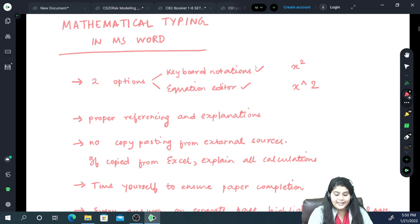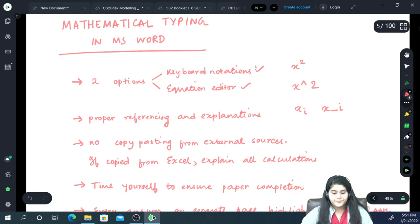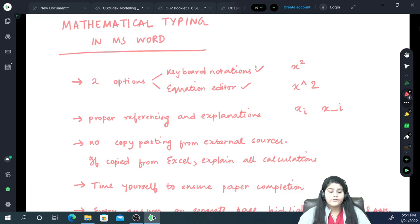If we want to write x_i, we write x underscore i. This is how we use keyboard notations. The institute has published a full document or handbook on these keyboard notations, which are the standard ones you might want to follow. In some cases, we have also recommended a few different options that can be used while writing your exams to make it easier and better.